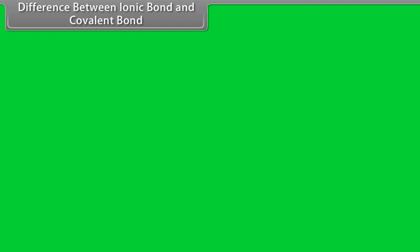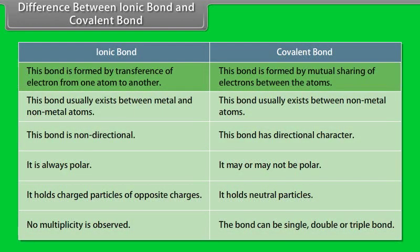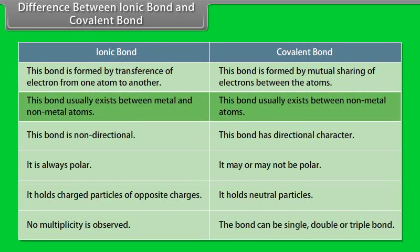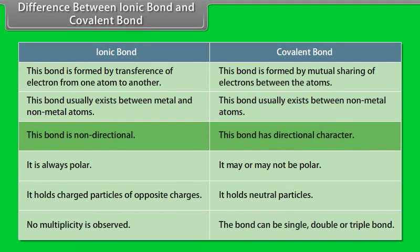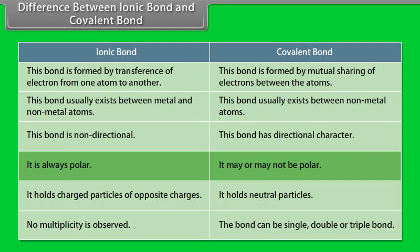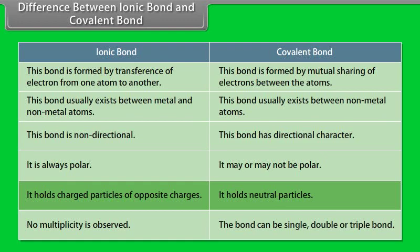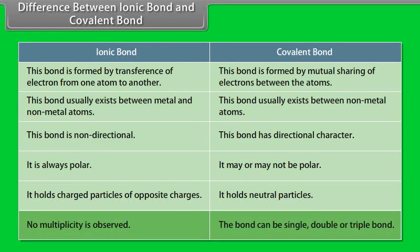Differences between ionic bond and covalent bond: Ionic bond is formed by transference of electrons, whereas covalent bond is formed by mutual sharing of electrons. Ionic bond usually exists between metal and non-metal atoms, whereas covalent bond usually exists between non-metal atoms. Ionic bond is non-directional, whereas covalent bond has directional character. Ionic bond is always polar, whereas covalent bond may or may not be polar. Ionic bond holds charged particles; covalent bond holds neutral particles. No multiplicity exists in ionic bond, whereas covalent bond can be single, double, or triple.